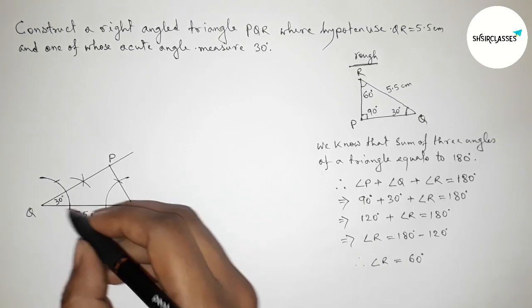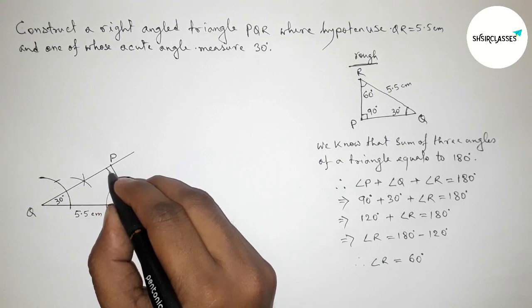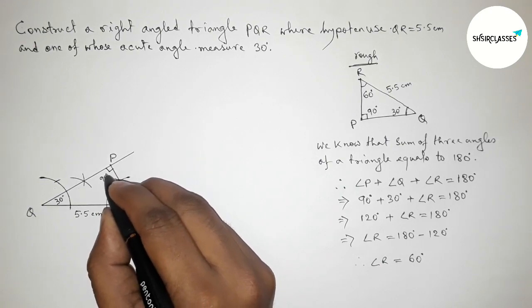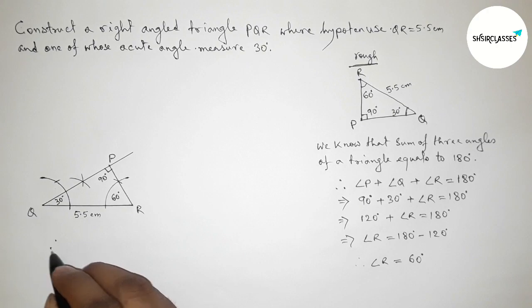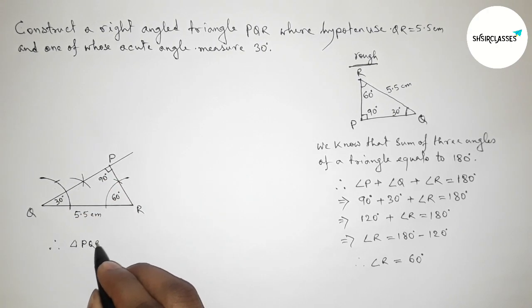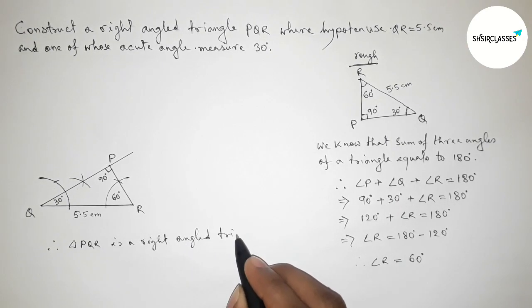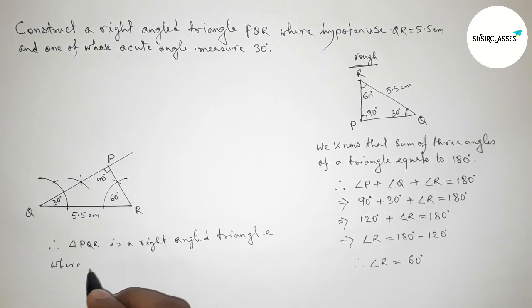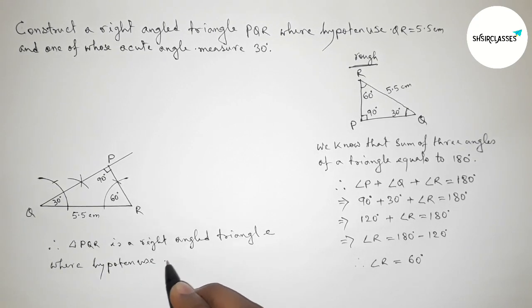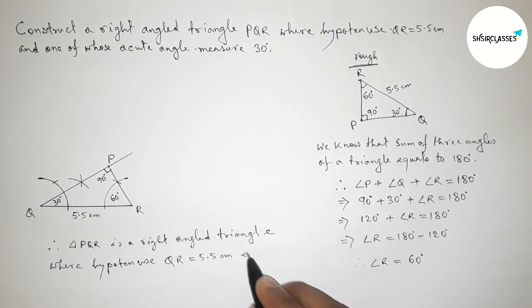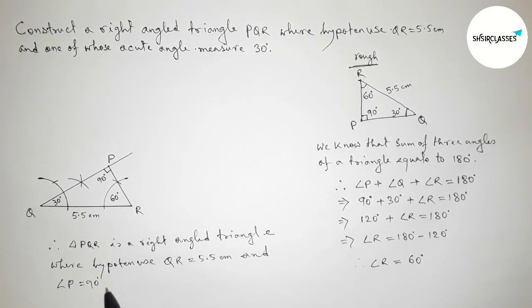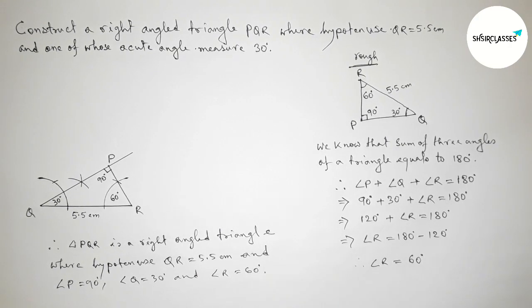So angle Q equals 30 degrees, angle R equals 60 degrees, and angle P equals 90 degrees. Therefore, triangle PQR is a right angled triangle where the hypotenuse QR equals 5.5 centimeters, angle P equals 90 degrees, angle Q equals 30 degrees, and angle R equals 60 degrees. That's all — thanks for watching. If this video is helpful to you, then share it.